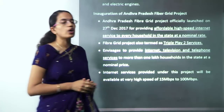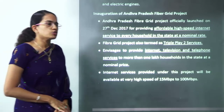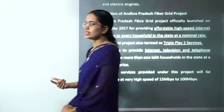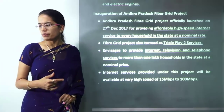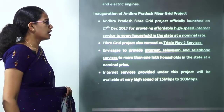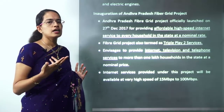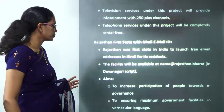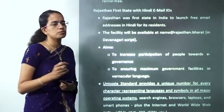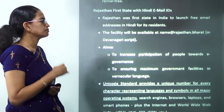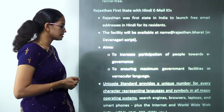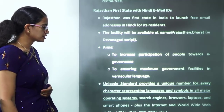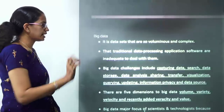A fiber grid project for Andhra Pradesh is being inaugurated, providing internet, television, and telephone services to nearly 1 lakh people at 15 Mbps or more. Rajasthan has become the first state to provide Hindi email IDs in the Devanagari script — the first such effort by any state in the country, using Unicode standards.